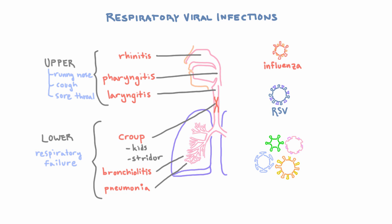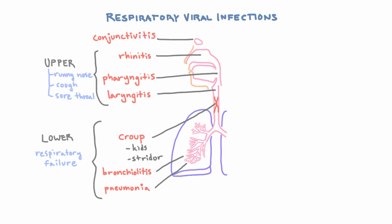There are a few more things to mention. The eyes are lined by mucous membranes, and a lot of the viruses that infect the respiratory tract can also infect those mucous membranes of the eyes, giving you conjunctivitis. Also, a viral infection can actually cause a bacterial infection — something we call bacterial superinfection. This happens because the virus damages the host defenses and makes us more susceptible to bacteria.